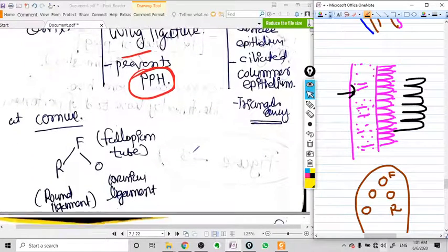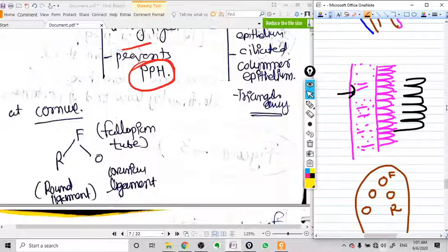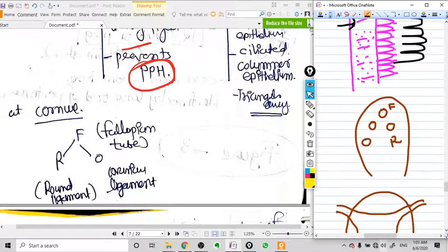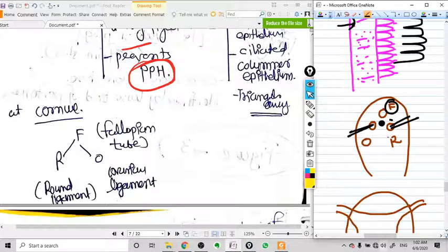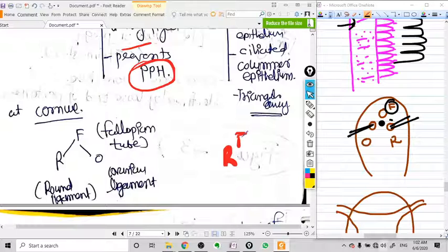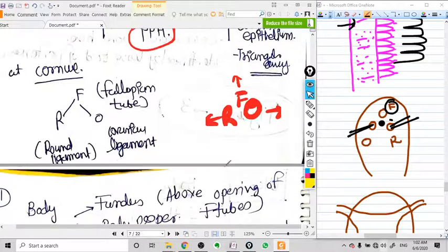If we see the corners of the uterus, we see three distinct structures arising from the corner. From the above side there is a fallopian tube, from anteriorly a round ligament gets origin, and posteriorly ovarian ligament also gets origin. So you can remember like this: RFO.